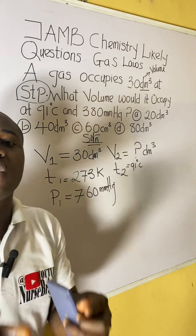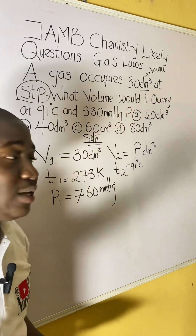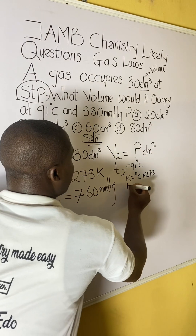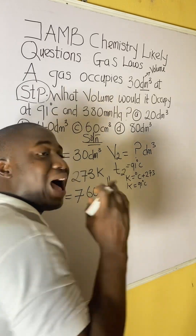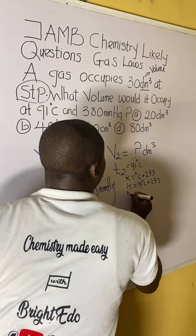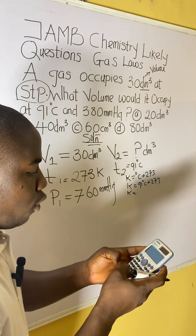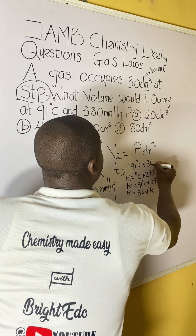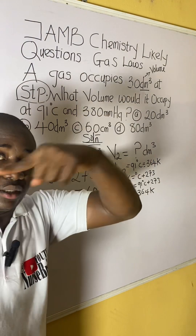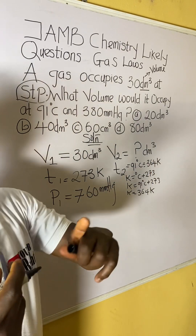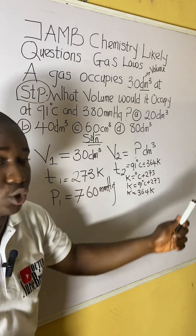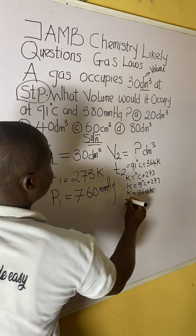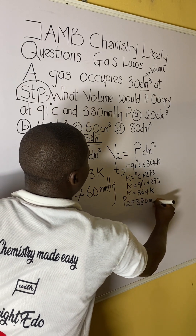The question says the gas would occupy this volume at 91 degrees Celsius — that is the second temperature, T2 = 91°C. You must convert degrees Celsius to Kelvin: Kelvin = degrees Celsius + 273. So T2 = 91 + 273 = 364 Kelvin. Therefore 91°C is equivalent to 364 K, and we use 364 K in the calculation.